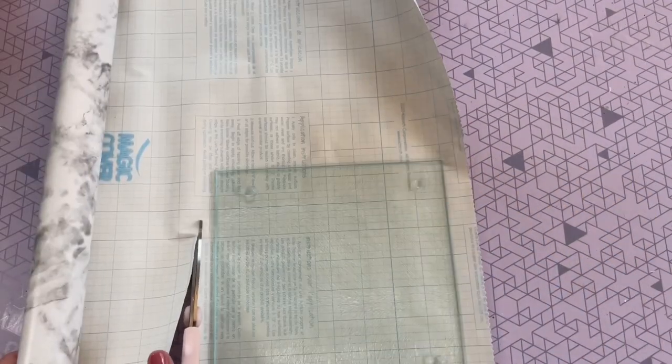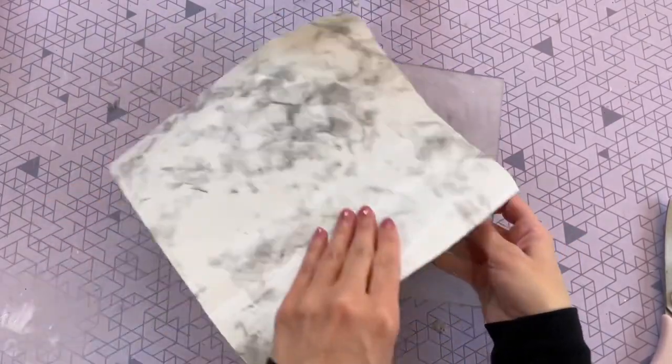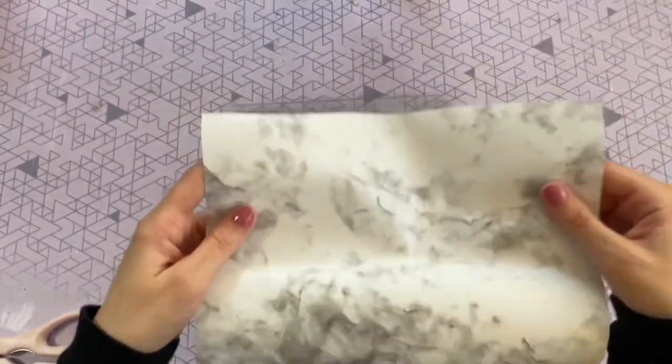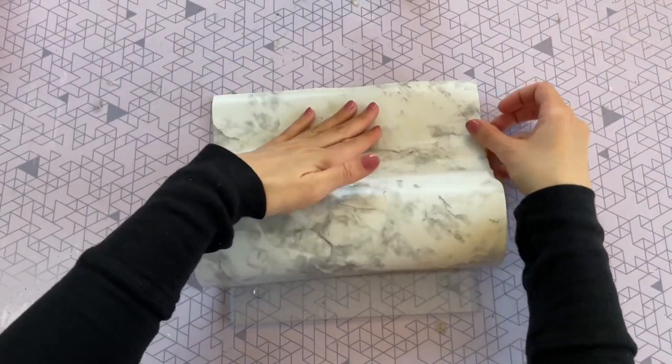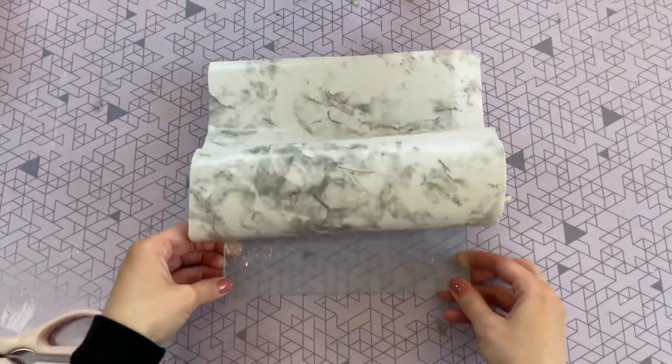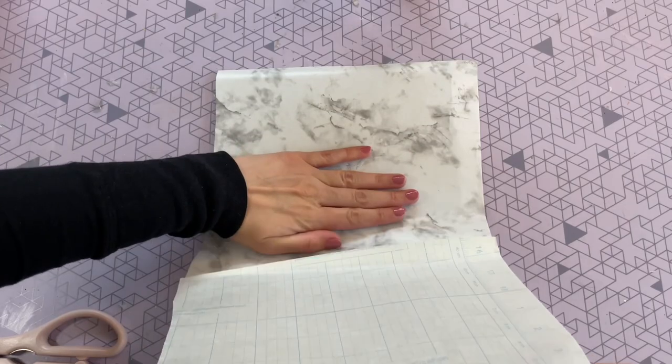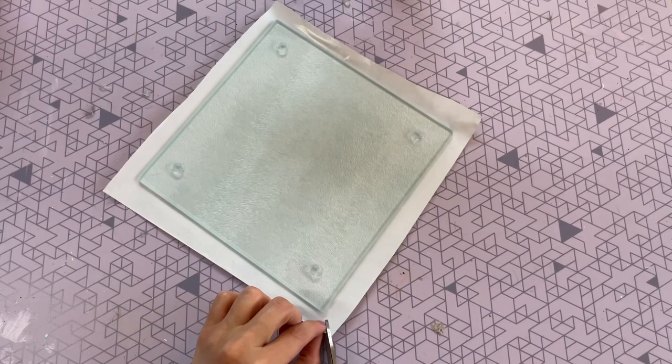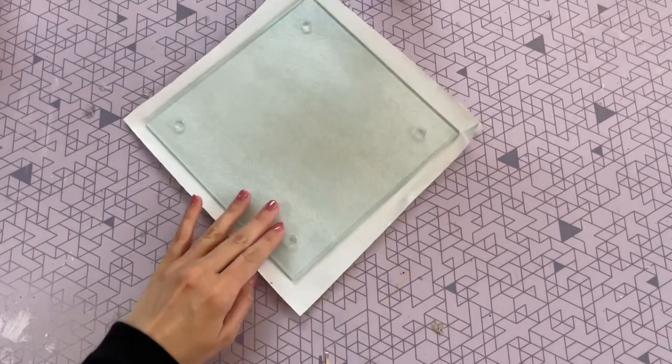So all I'm going to do is just place my cutting board on top of my contact paper and just cut a square that is slightly larger than the glass cutting board. Now I'm just going to go ahead and start to take off that backing and reveal the sticky portion. It's easy if you just kind of remove a third of it and then place it on your object and then slowly pull the rest off. It just makes it a little bit easier. But this contact paper was surprisingly easy to work with. So that was definitely a plus.